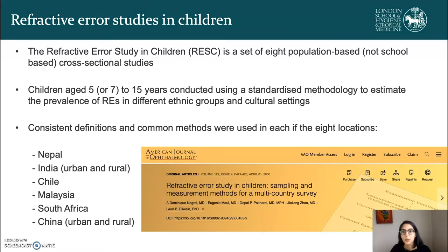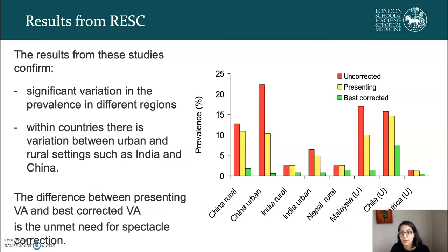The Refractive Error Studies in Children, or RESC studies, are a set of eight population-based studies conducted in children aged 5 or 7 up to about 15 years old, using standardized methodology to estimate the prevalence of refractive errors in different ethnic groups and cultural settings. They used consistent definitions and common methods across all eight locations: Nepal, India (urban and rural), Chile, Malaysia, South Africa, and China (urban and rural). The results confirmed significant variation in prevalence across different regions, as well as differences within countries — particularly between urban and rural settings in India and China.